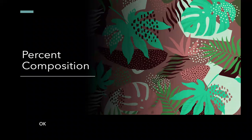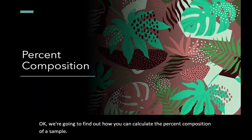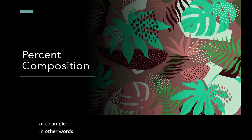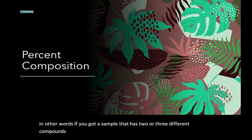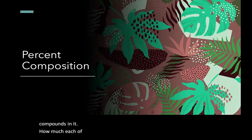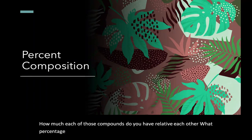We're going to find out how you can calculate the percent composition of a sample. In other words, if you've got a sample that has two or three different compounds in it, how much of each of those compounds do you have relative to each other? What percentage of the first one, what percentage of the second one, and so on, do you have in the sample?